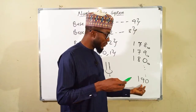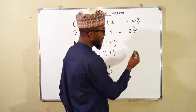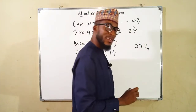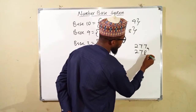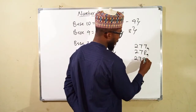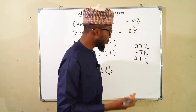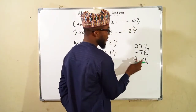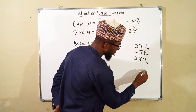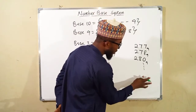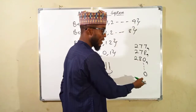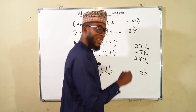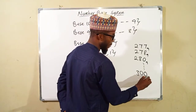For base 9, suppose we have 2, 7, 7 in base 9. The next number is 2, 7, 8, base 9. The next would be 2, 7, 9 — but we do not have 9 in base 9. 9 is a complete bundle, so instead of writing 9, we write 0 and carry that bundle to the next digit, making it 8. Keep increasing until it reaches 9 again, which becomes 0, carrying forward, until eventually we reach 3, 0, 0 in base 9.